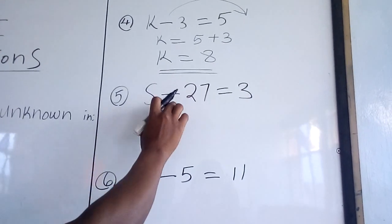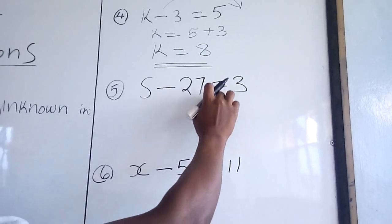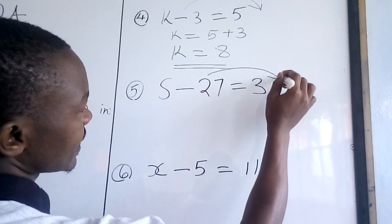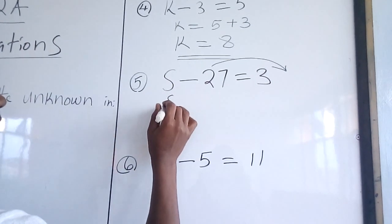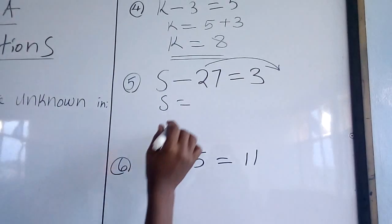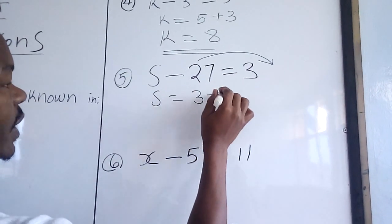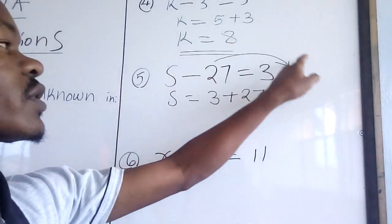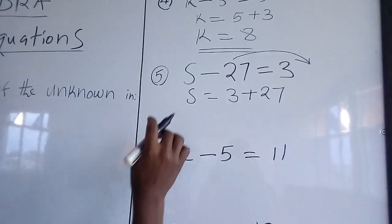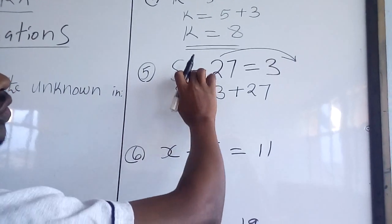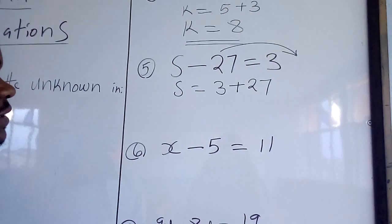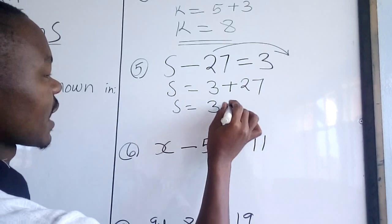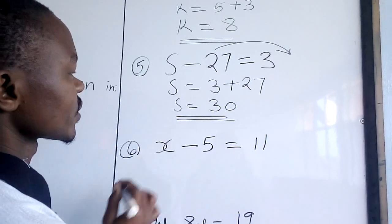Then we have S minus 27 is equal to 3. What are we going to do? Take the whole number to the other side. So we are going to have S is equal to 3 plus 27. Remember, the moment this sign crosses the equal sign it changes. Therefore, if it is a minus, on the right hand side it will be a plus. Therefore, S is equal to 3 plus 27, we get 30. Therefore, S is equal to 30.